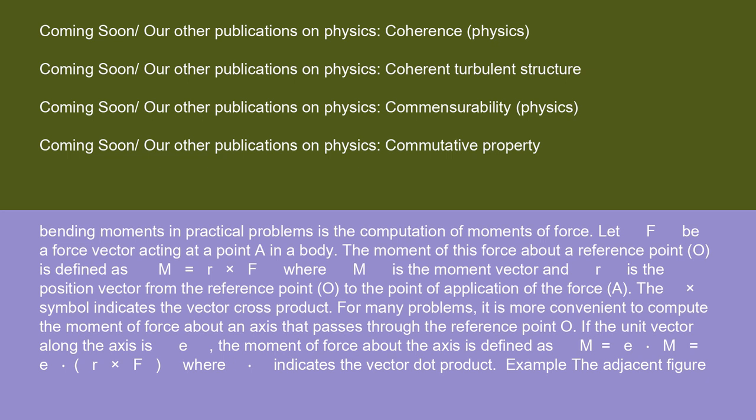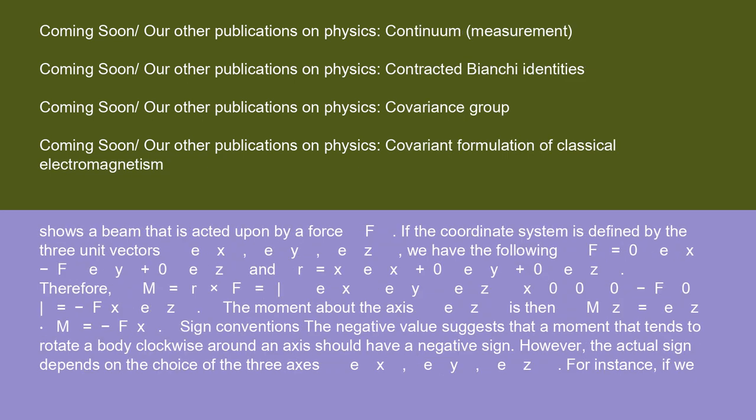Example: the adjacent figure shows a beam that is acted upon by a force F. If the coordinate system is defined by the three unit vectors e_x, e_y, e_z, we have the following: F = 0·e_x - F·e_y + 0·e_z, and r = x·e_x + 0·e_y + 0·e_z. Therefore,